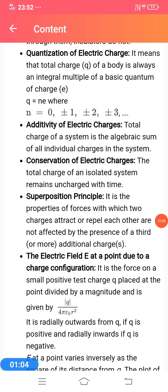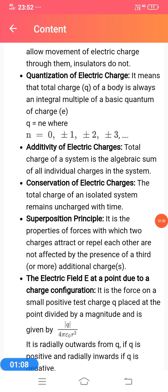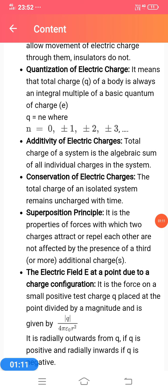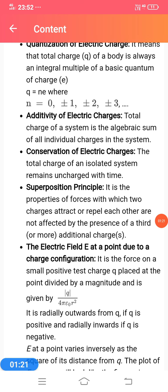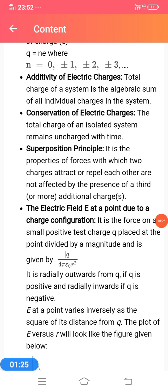Third property: Quantization of electric charge. It means the total charge of a body is always an integral multiple of a basic quantum of charge. q equals ne, where n equals 0, plus minus 1, plus minus 2, plus minus 3, and so on.